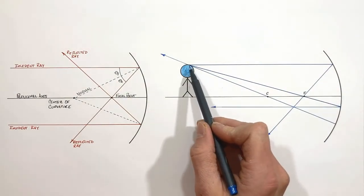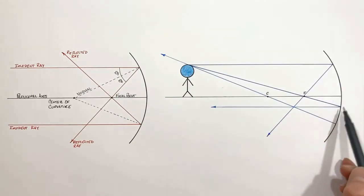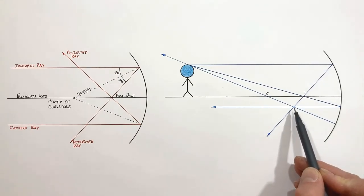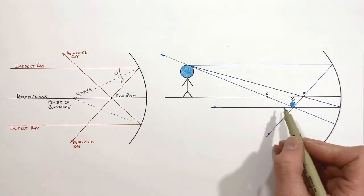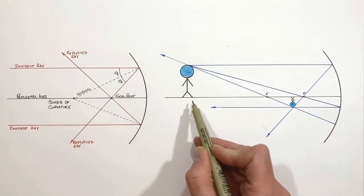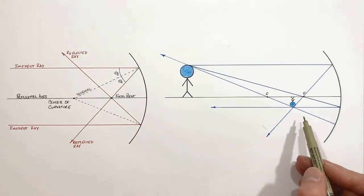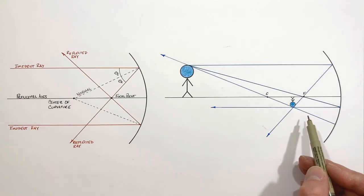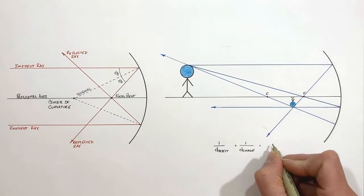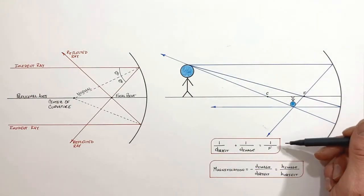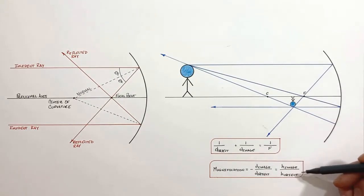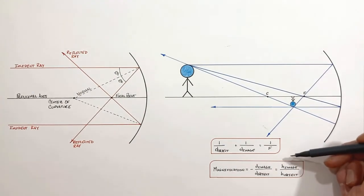All three of these incident rays originated at the top of the person's head, struck the mirror at different locations, and bounced off the mirror. You'll see they all converge right here — this is the position where the reflected image of the person is going to form. The image that has been formed is a tiny inverted reflection of the object in front of the mirror. We've figured out where this person's image will form using a ray diagram, but there are also equations that can do the exact same thing. These two equations can be used to calculate both the position and size of an image formed when an object is placed in front of a mirror, but let's save how to apply them for another day.